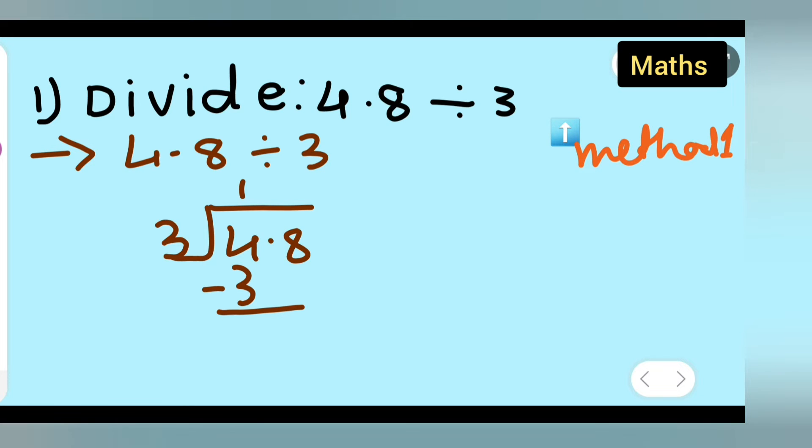Bring down the 8 and put the decimal point here. Now, 3 sixes are 18. Write down 3 × 6 = 18. If you subtract this, you get 0.